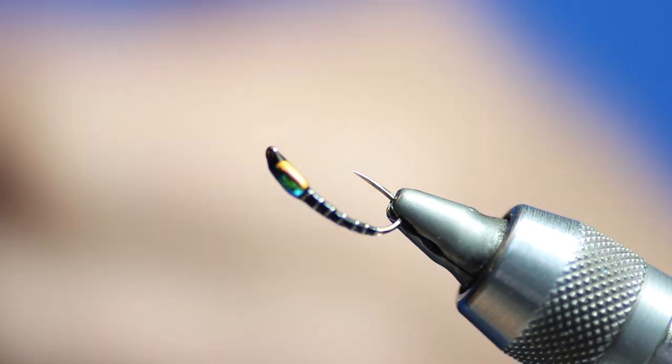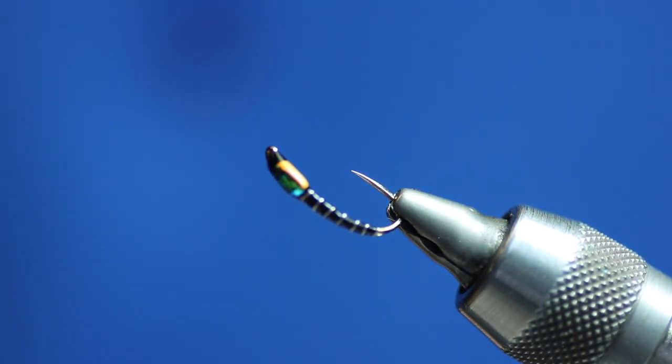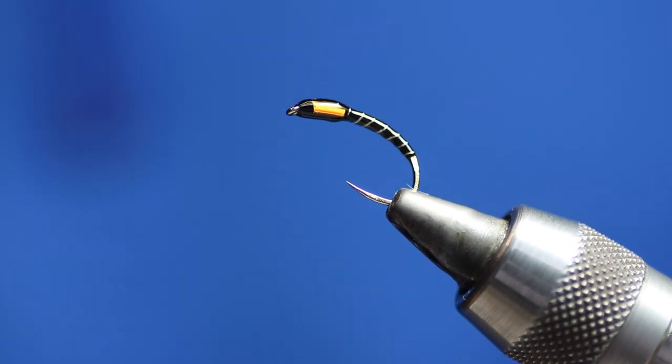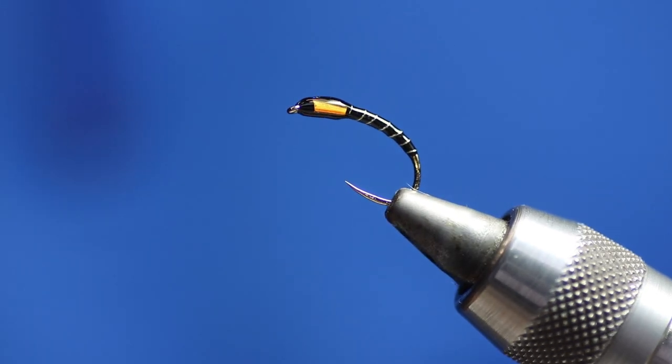And that's it. So that's just a wee pearl backed standard buzzer, which is pretty damn easy to tie and catches fish. Doesn't have to be anything super duper fancy. I hope you enjoyed it guys. Hope you're going to follow me on Facebook, David C Downey.